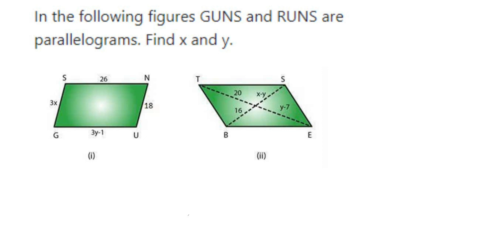Hey everyone, here is a question on parallelograms. The question is: In the following figures, GUNS and RUNS are parallelograms. Find x and y. So they have given two parallelograms, SNUG or GUNS or the next one is RUNS.